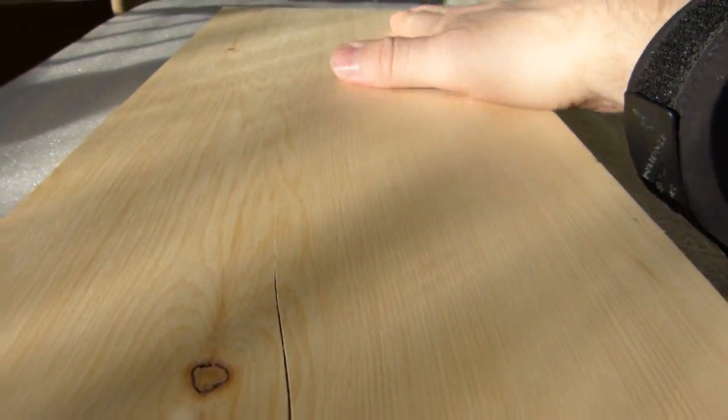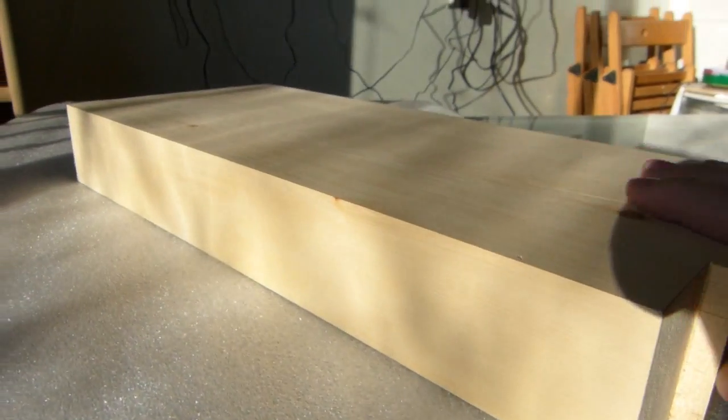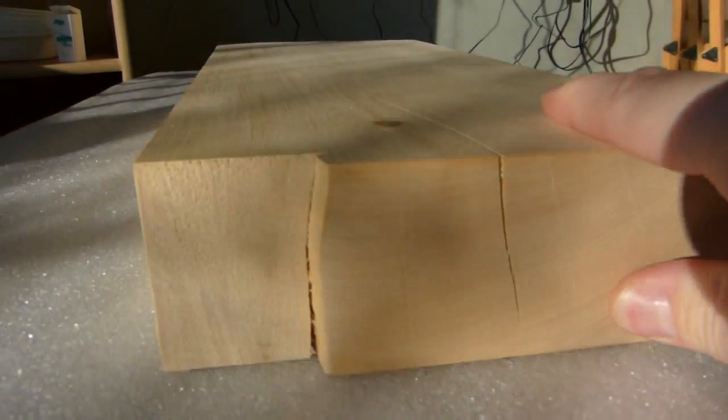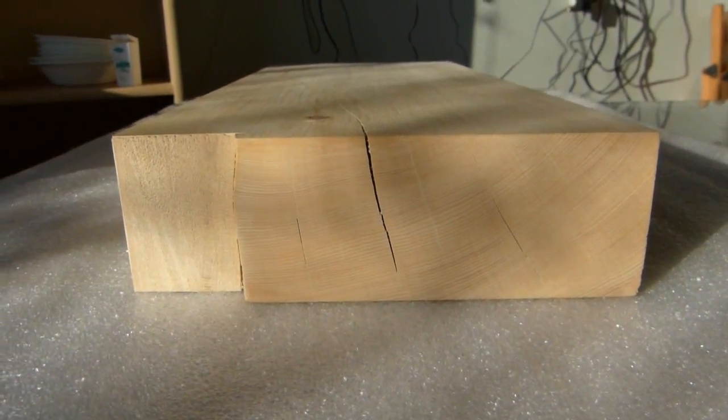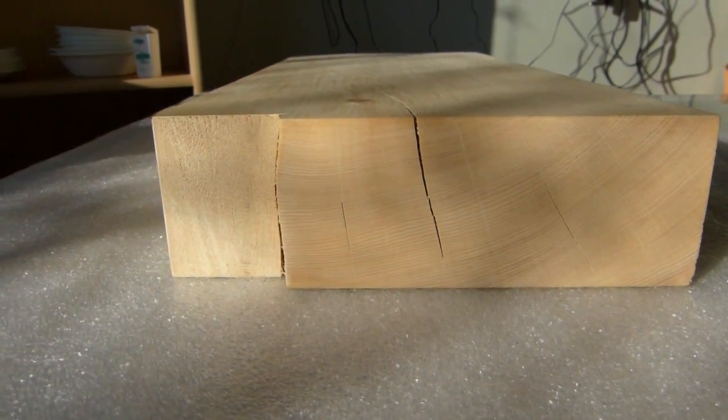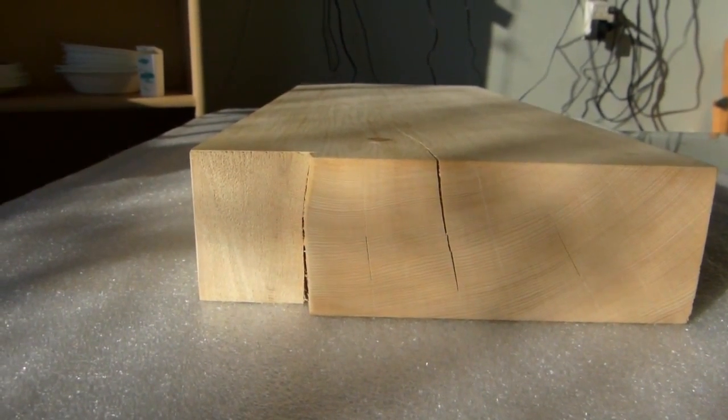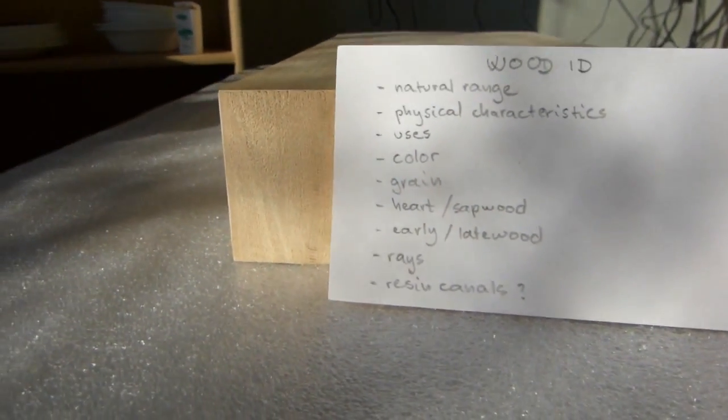Yellow Cedar is native to the Pacific Northwest. Although it is planted for ornamental purposes worldwide, it is only in its natural range where the trees grow big enough for huge boards to be sawn out of them, just like this. In this video we will go over the physical characteristics and uses of yellow cedar, as well as the visible features that identify yellow cedar. We are going to work through this list here.